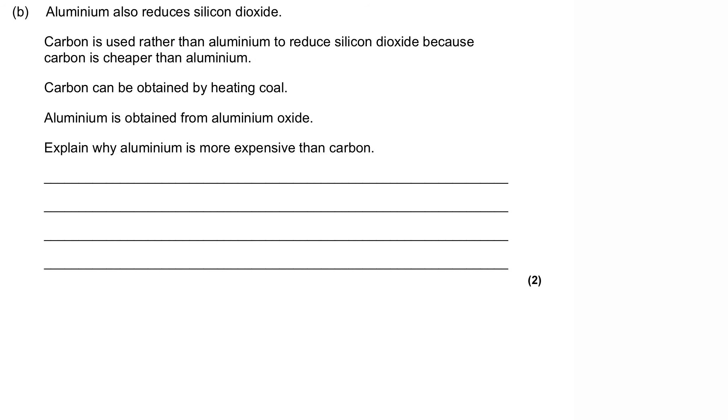Aluminium also reduces silicon dioxide. Carbon is used rather than aluminium to reduce silicon dioxide, because carbon is cheaper than aluminium. Carbon can be obtained by heating coal, and aluminium is obtained from aluminium oxide. Explain why aluminium is more expensive than carbon.